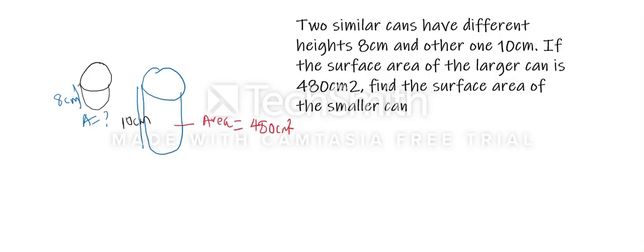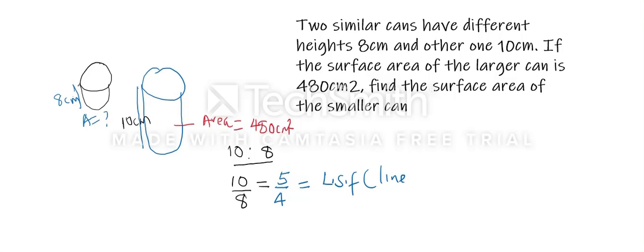The bigger height is 10 cm and the smaller height is 8 cm. Converting this into fraction form, we have 10 over 8. Simplifying further, we get 5 over 4. This we call the linear scale factor.